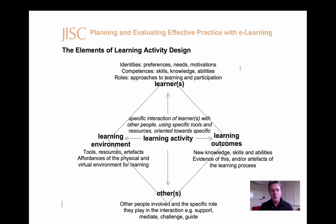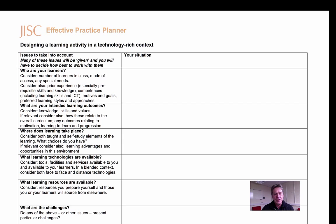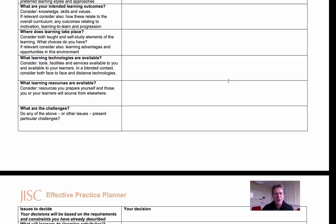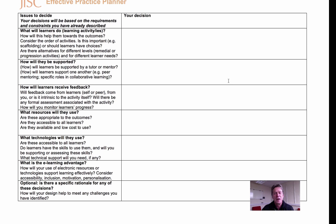Using this framework, we offered participants in the workshops a tool that we call the Effective Practice Planner. The Effective Practice Planner is a table containing a series of questions about the decisions that might need to be made by the learning designer. If you look closely, you'll find that the rows in the Effective Practice Planner correspond loosely to the four elements of the learning design framework that I presented earlier. Some of you might find this a convenient way to think about and represent your design.